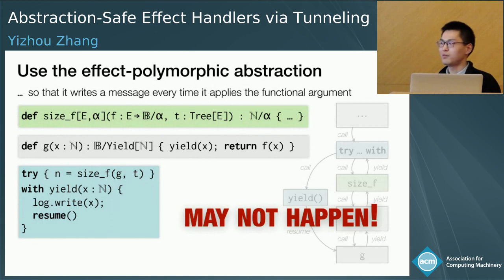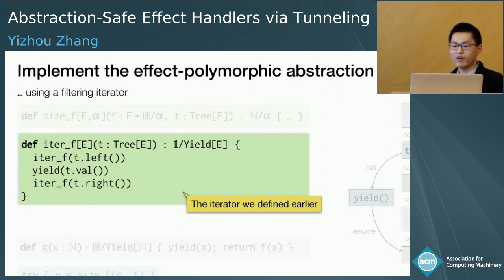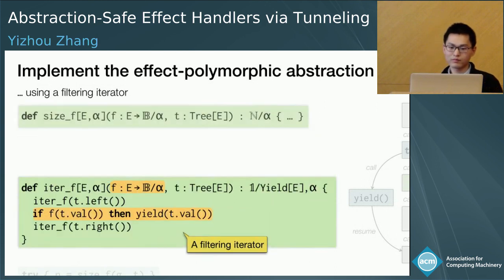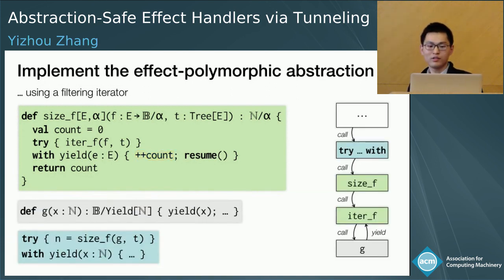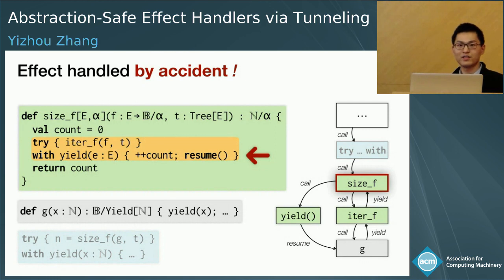However, this will not happen for particular implementations of the higher-order abstraction size_F. Consider one such implementation that uses a filtering iterator, iterF, obtained by modifying the iterator defined earlier: iterate the left subtree, yield the current value only if it satisfies predicate F, and iterate the right subtree. This particular implementation of size_F counts how many elements are yielded by this filtering iterator, incrementing a counter every time iterF yields a value. Because handlers are dynamically scoped, when G yields, the most recent handler for yield on the stack is no longer the one in the client code — it is the one inside size_F. So size_F handles this effect by accident, causing the counter to mistakenly increment by one.